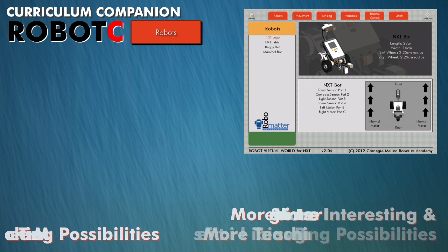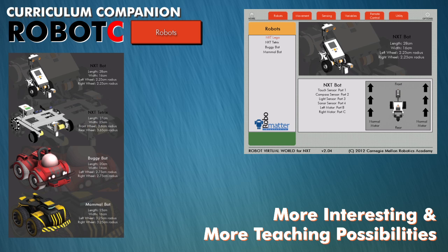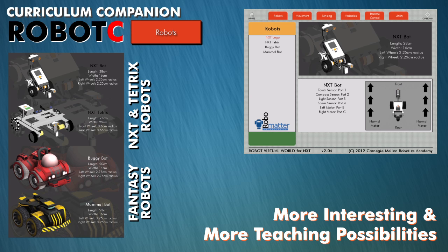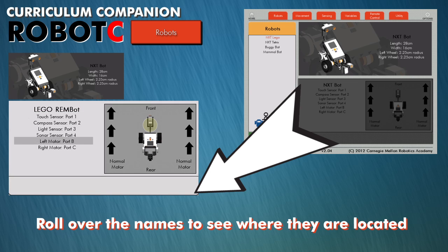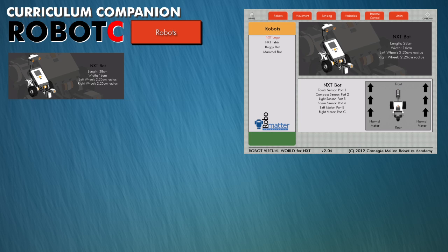To make the teaching tool more interesting to students and provide additional teaching possibilities, both NXT and Tetrix robots along with fantasy robots are included. Once a robot is selected, all the motor and sensor names and ports are listed. Rolling over the names identifies where they are located.